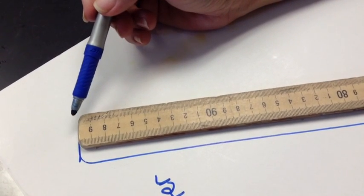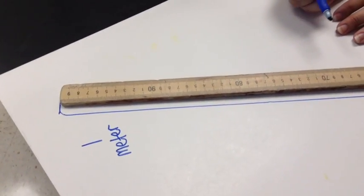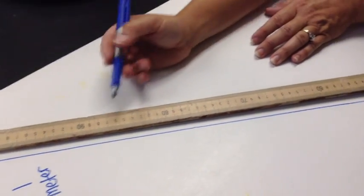Anyway, a meter is broken down into smaller increments. You can see the little tiny lines on here.